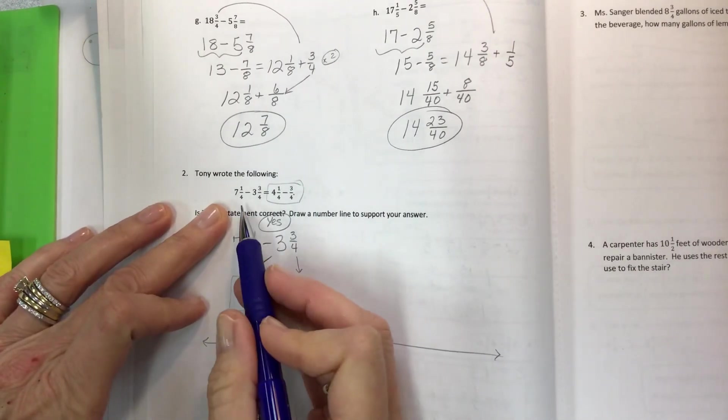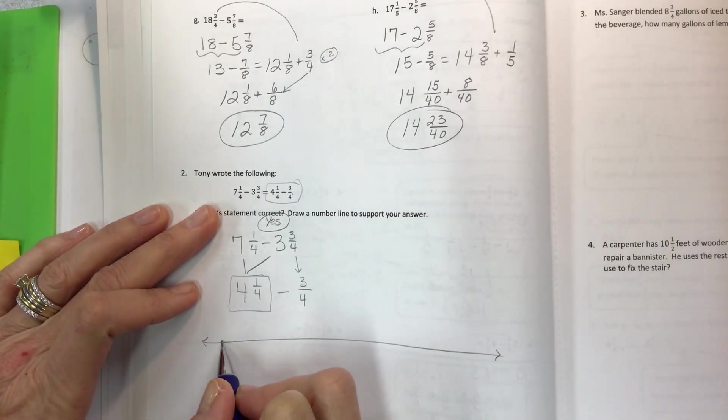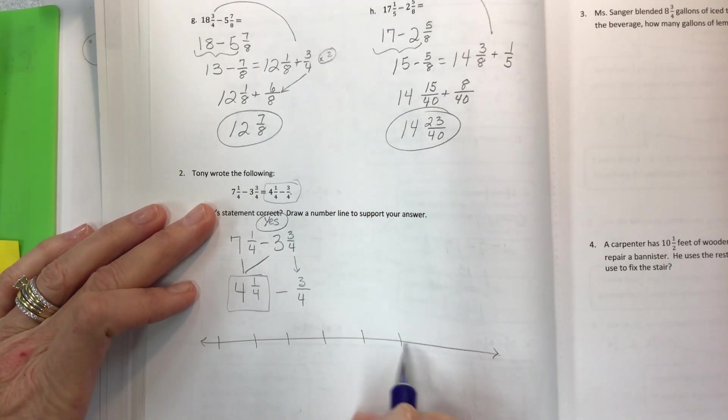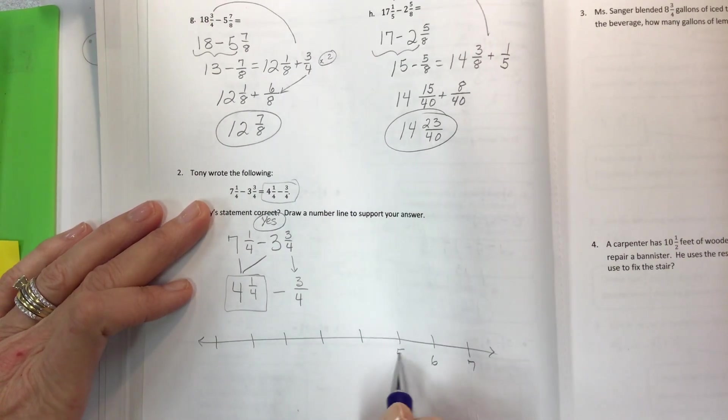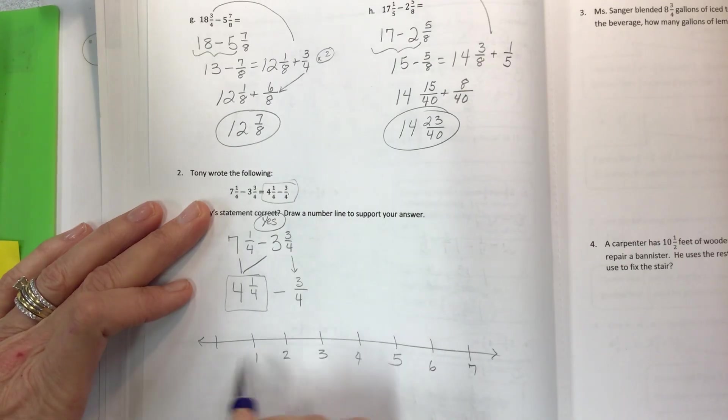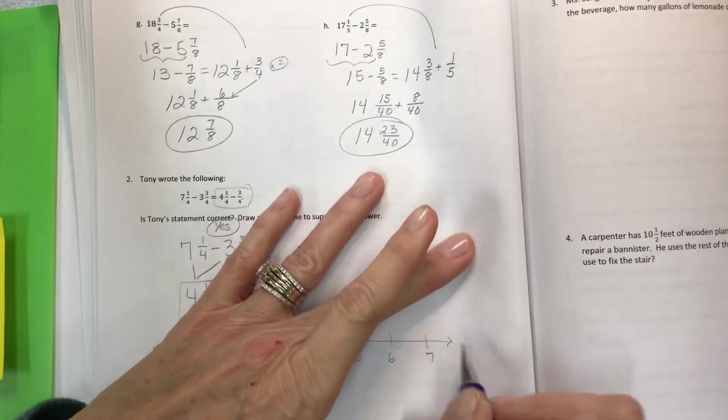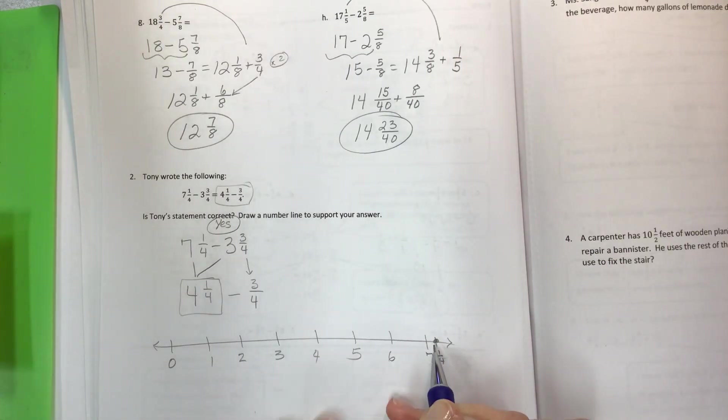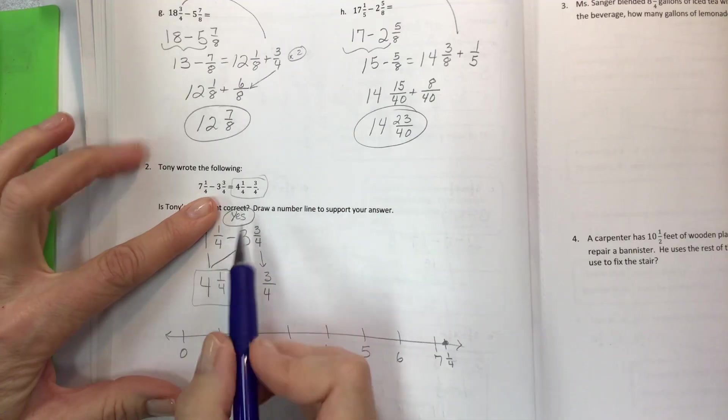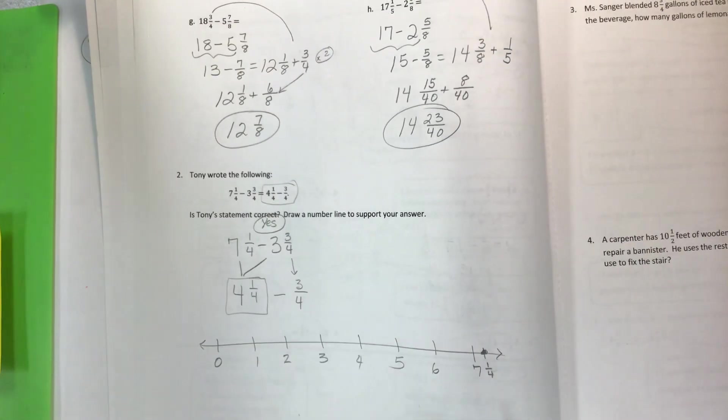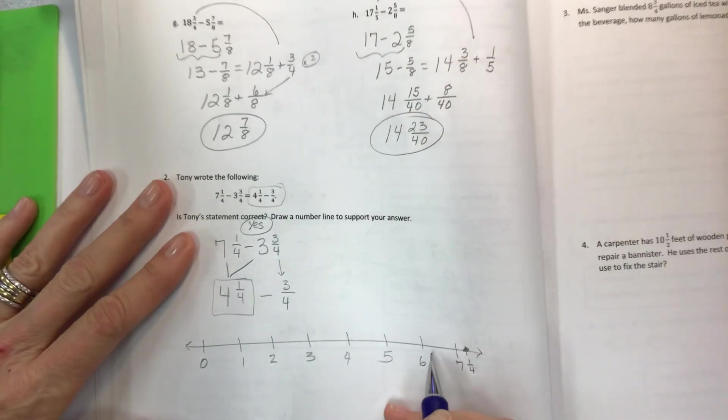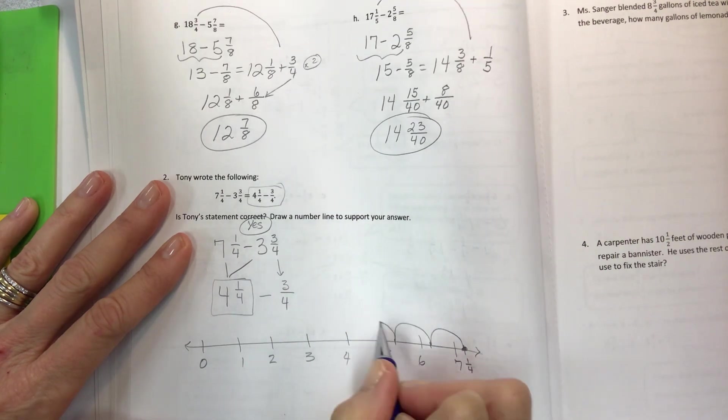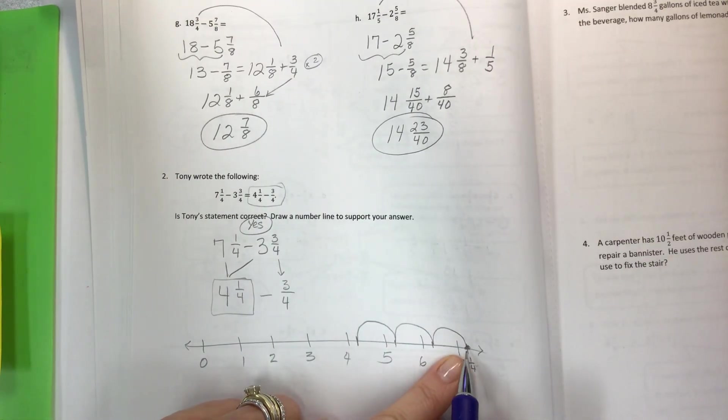It says draw a number line to support your answer. So real quick, we need to start over seven. So we're going to have, you don't necessarily have to have zero, but sometimes it helps me space them out. Zero, one, two, three, four, five, six, seven. If this is seven, then label just the whole numbers for a minute. And if we have fourths, then let's call this seven and one-fourth. That's where we're going to begin. Now, if I take away three and three-fourths, I can do three whole numbers to subtract, which is going to put me at six and a fourth, five and a fourth, and four and a fourth, because I'm starting above seven. I'm starting at seven and a fourth. So this is minus one, and this is minus one, and this is minus one, as we move down the number line, because it's subtraction.